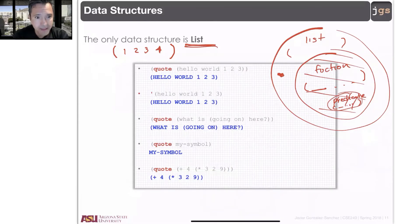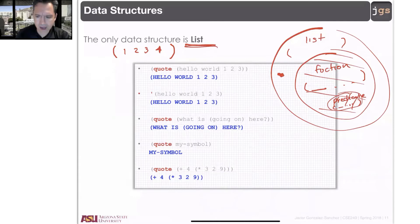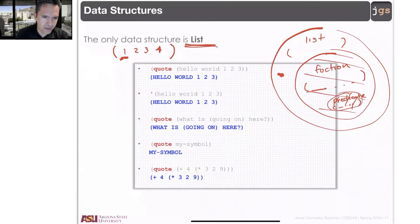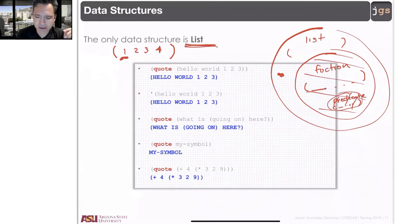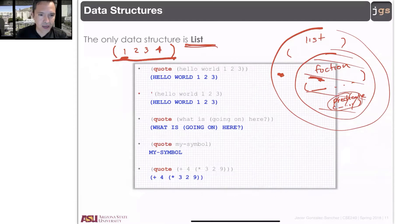Everything is fine, but there is a problem. By default, Lisp is going to understand that this is a function and that the first element is the name of the function. It's going to try to execute that. And obviously, there is no function with the name one — that name does not exist. So it's going to tell me that I have an error. What I need to do is tell Lisp: this is not a function.